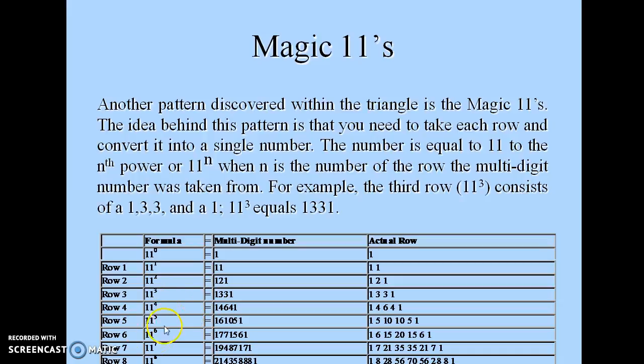The issue arises when it is 11 to the power 5, which gives me, on solving, the actual number 1, 6, 1, 0, 5, 1. But this particular number is not present as such on Pascal's Triangle, but it is implicitly hidden on Pascal's Triangle. That hidden number, how can we identify it?